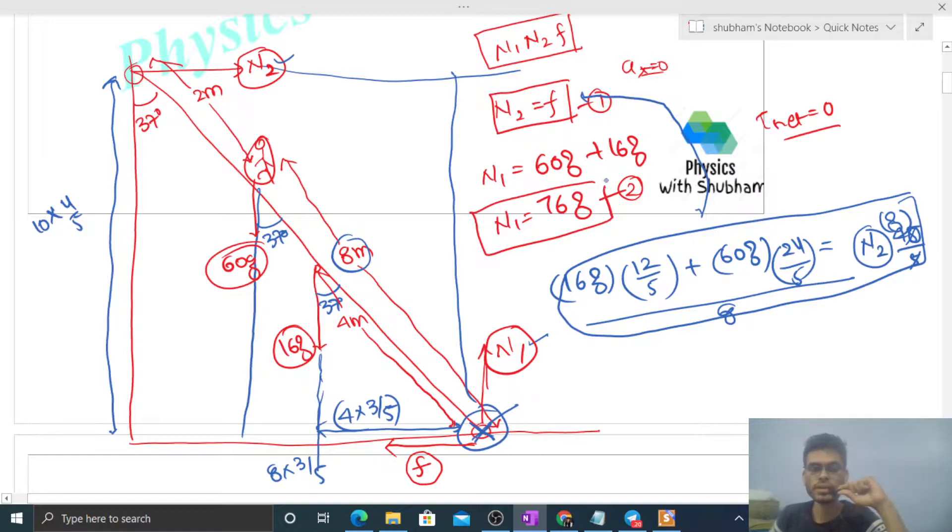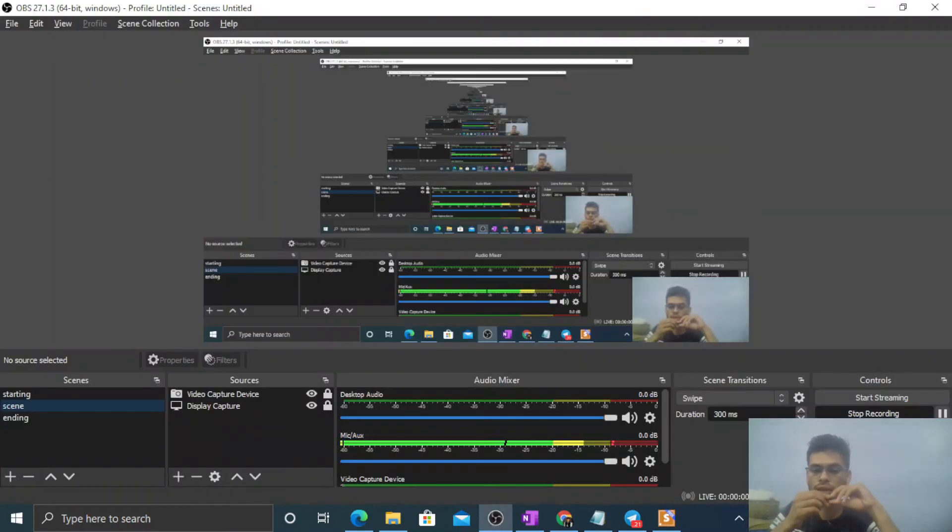Now how will we find out coefficient of friction, minimum value of coefficient of friction? Whatever value F is, that will always be less than or equal to limiting value of friction. What is limiting value of friction? That is N1 into Mu. Why N1? Because the normal reaction between the ground and the ladder is N1. And friction is acting there, so N1 into Mu. So you can say F by N1 is always less than or equal to Mu. Means whatever value of Mu is, it will always be greater than F by N1. So what is the minimum value of Mu? That is F upon N1. We have found the value of F and the value of N1, so from here Mu will come. So I think you have understood. Let me know if you still have any confusion, we can discuss further.